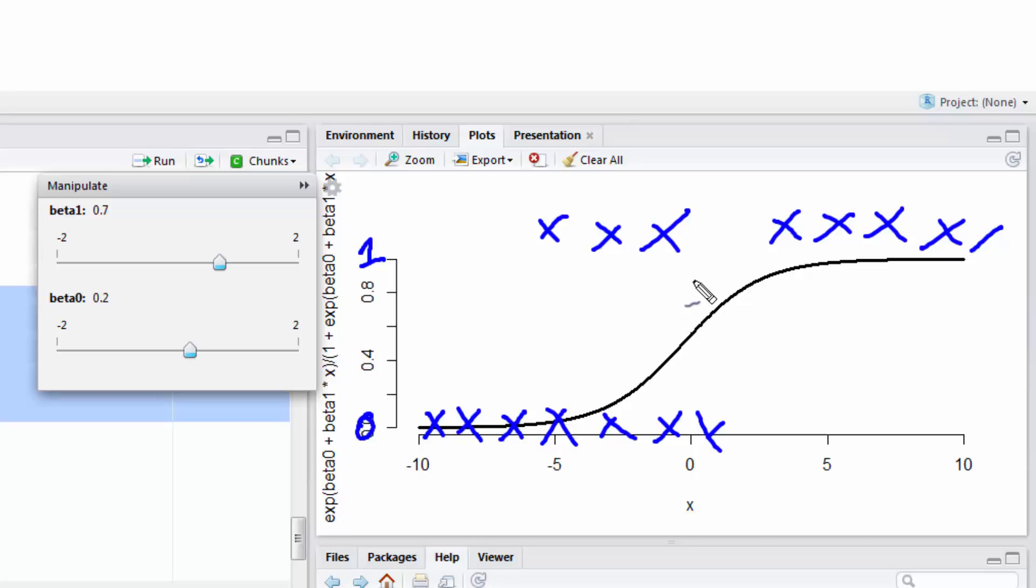So what R is trying to do, so it knows as I head to larger x values, it becomes increasingly likely that my outcome is a one. Again, as I head towards smaller x values, it becomes increasingly likely that my outcome is a zero.